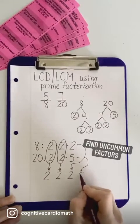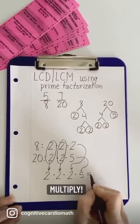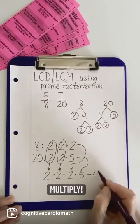Then we'll use all of these common and uncommon factors to find our LCM by multiplying, and we will get 40.